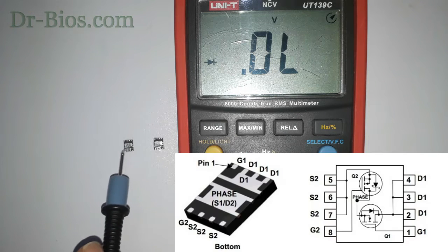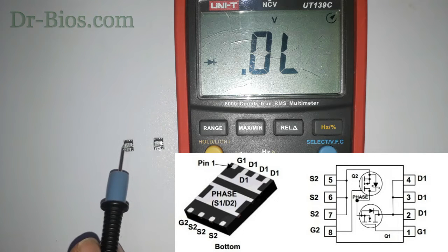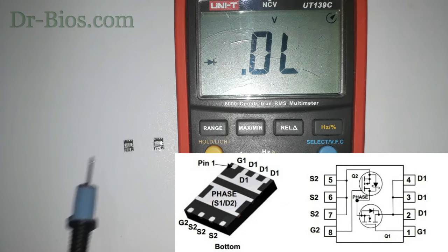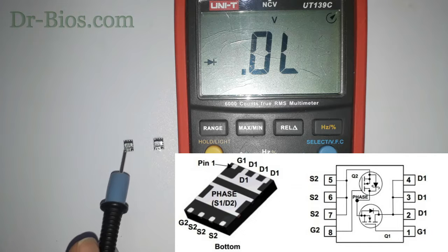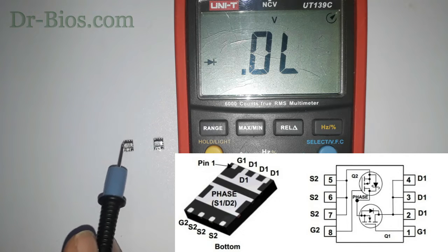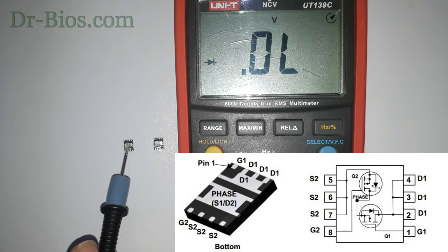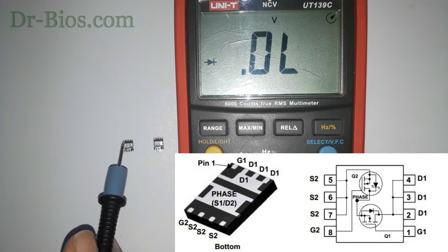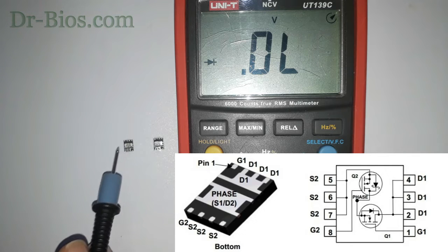These three connected pins are drain of high MOSFET. This common pin is source pin of high MOSFET and drain pin of low MOSFET. These three pins in front of drain pin of high MOSFET are source pin of low MOSFET.